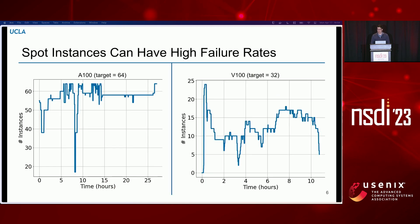Let's look at what these preemptions can look like. Here we can see two examples collected from two different clouds of a large cluster of spot instances running, and we can see how the size of the cluster changes over time. There are cases where we experience quite a lot of preemptions in short amounts of time, and also cases where preemptions happen in bulk, as shown in the red boxes. In many cases, preemptions happen due to reasons not accessible to cloud users, making it hard to predict and react to them ahead of time.